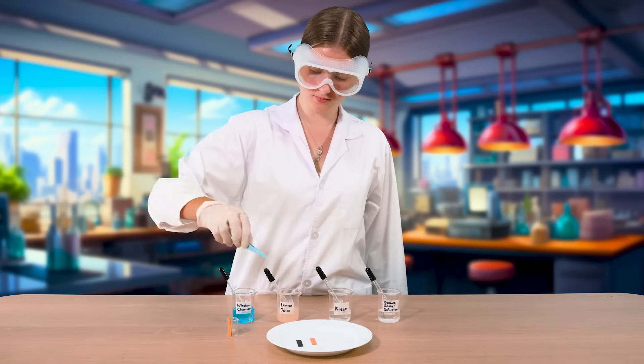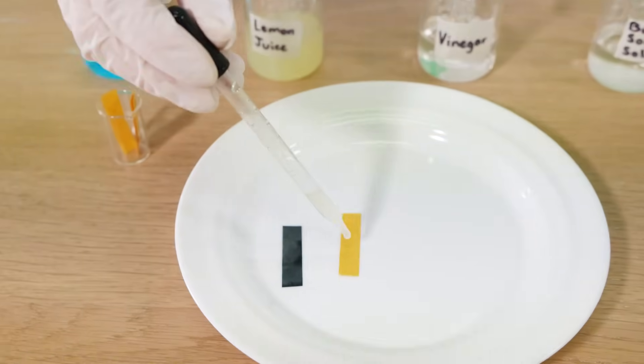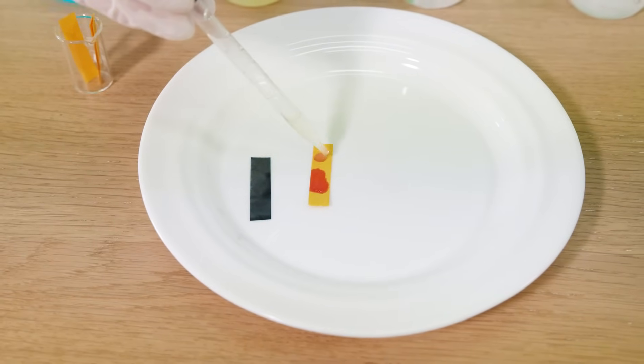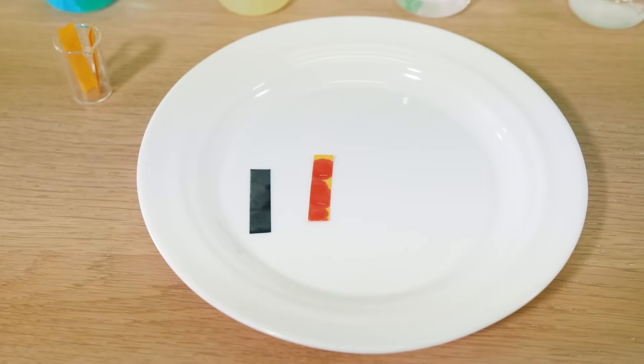Next we'll test the lemon juice. The litmus paper turns red, showing that lemon juice is an acid.